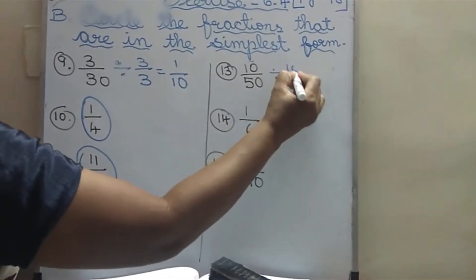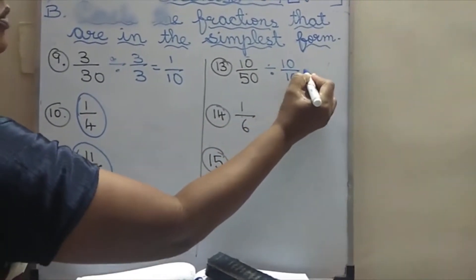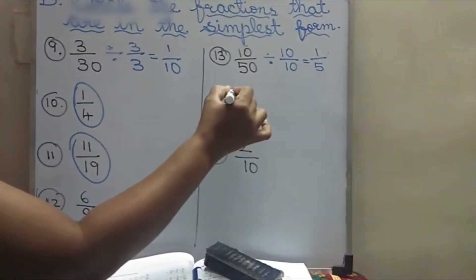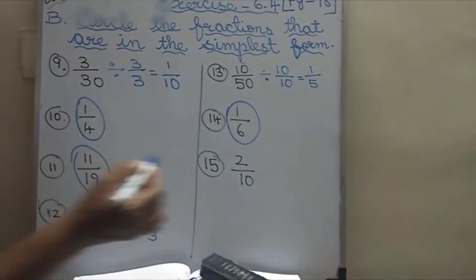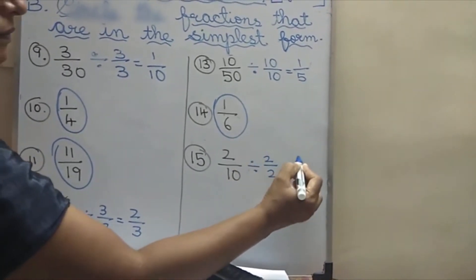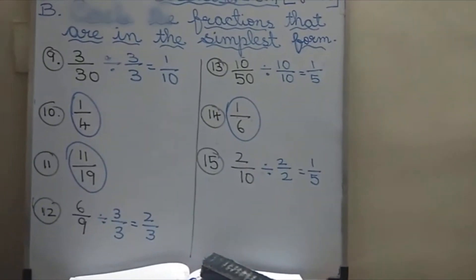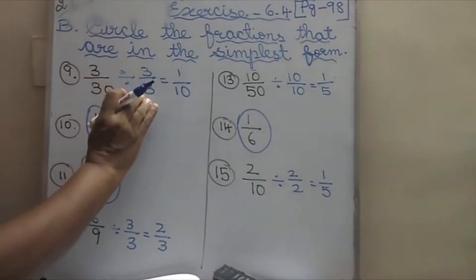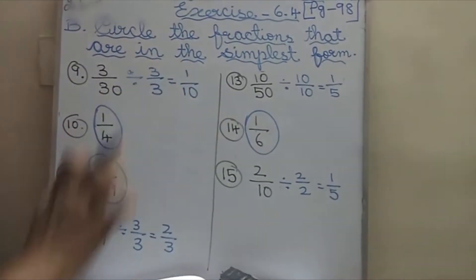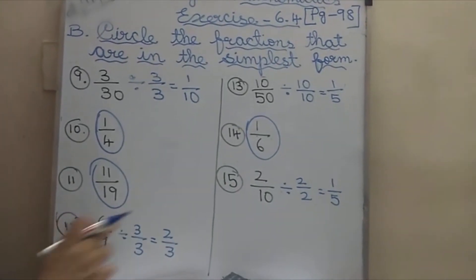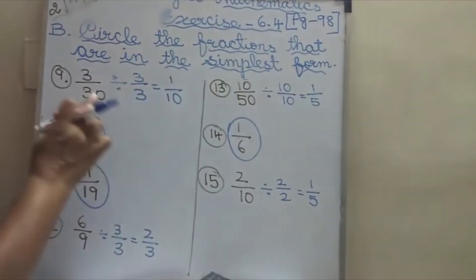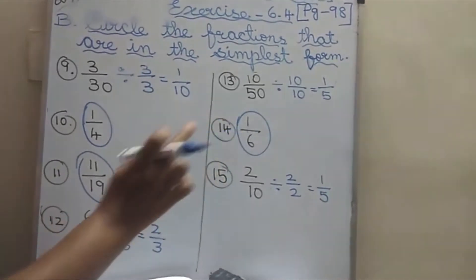10 by 50 — you can put it in 10 tables: 10 by 10. So what will come? 1 by 5. And 1 by 6 doesn't go — so this is simplest form. And 2 by 10 — this one goes in 2 tables: 1 2 is 2, and 5 2s are 10. If the number can be divided like this, you should not circle. If it doesn't divide, you have to circle. 15 sums I have taught — what are the fractions in the simplest form, you have to circle.